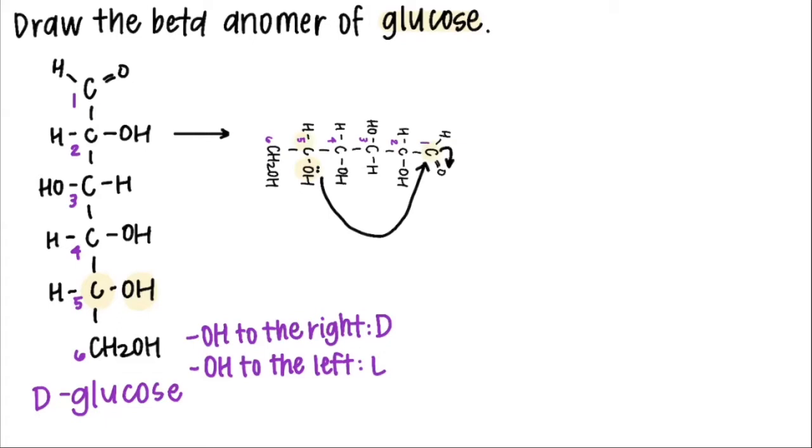Because the nucleophilic attack can happen from either side, this carbon becomes the anomeric carbon. So the hydroxyl on the anomeric carbon or carbon number one can either point up in the beta conformation or down in the alpha conformation and that's how I tell the difference between the two.